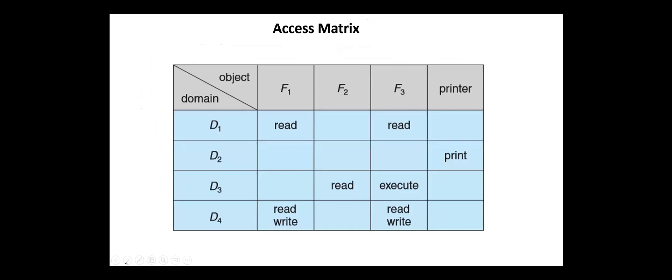Consider the following access matrix with four domains and four objects. A process executing in domain 1 can read files F1 and F3. A process executing in domain 2 can use the laser printer. A process executing in domain 3 can read file 2 and execute file 3. So file 2 can be read only by the process executing in domain 3, and the laser printer can be used only by a process executing in domain 2.